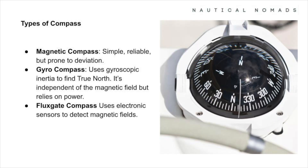There are three main types of compasses used in navigation. The magnetic compass is simple and reliable but prone to deviation. The gyrocompass uses gyroscopic inertia to find true north and is independent of the magnetic field, but relies on power. The fluxgate, or electronic compass, uses electronic sensors to detect magnetic fields.